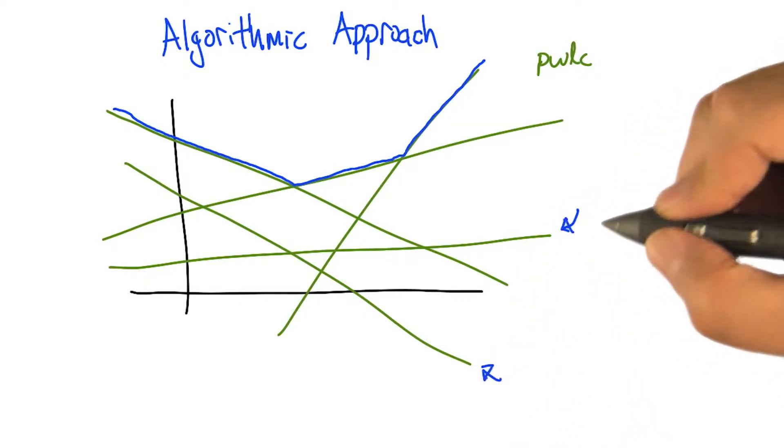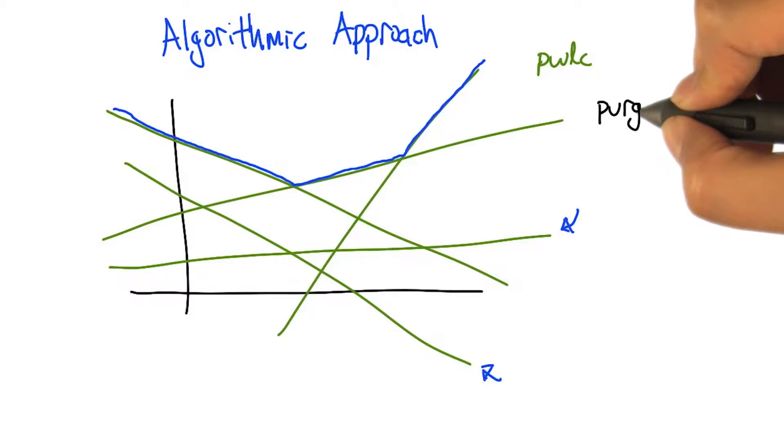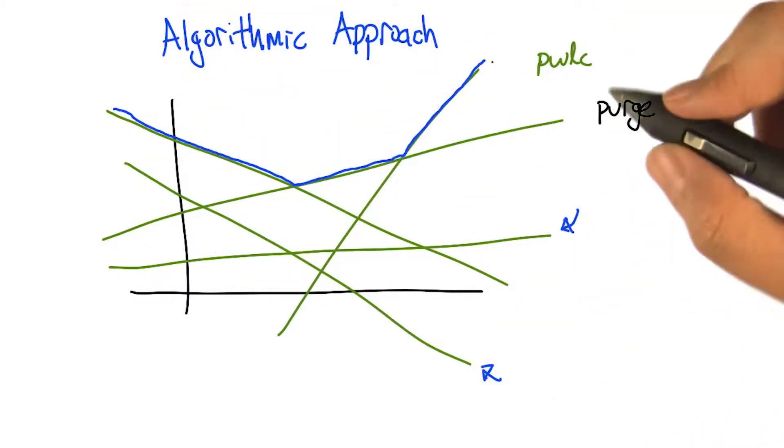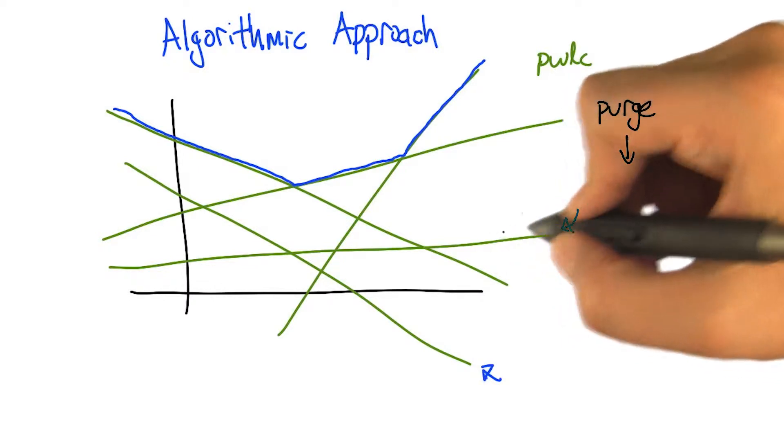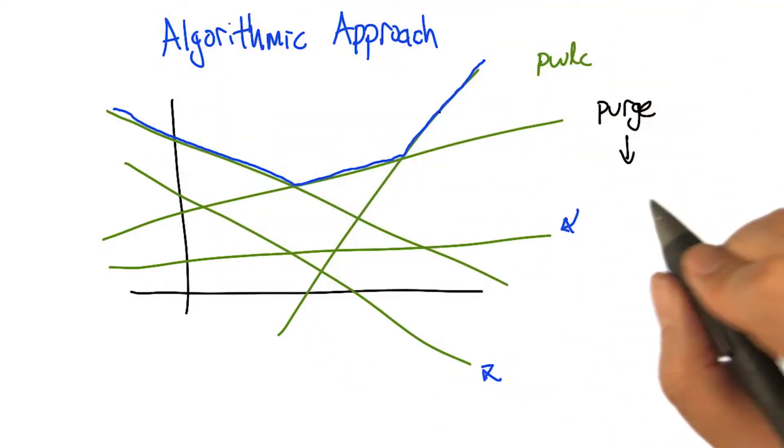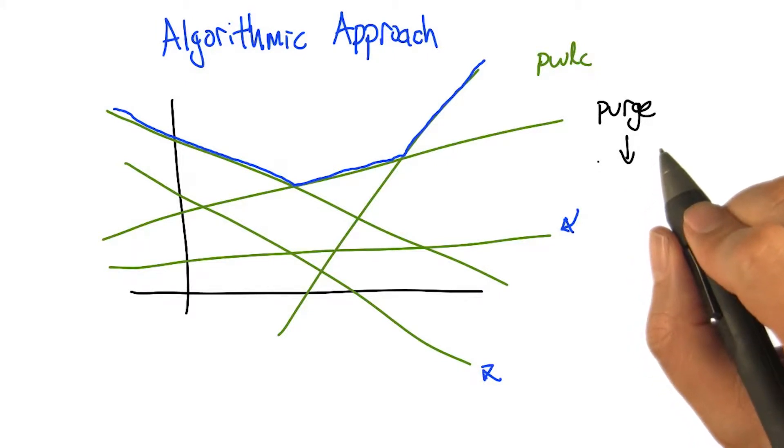So we can define a computational operation that we call purge, that takes a bag of vectors and shrinks it down, purges out any of vectors that aren't really needed to represent the upper surface, the piecewise linear convex function. Wait, how computationally complicated is it to do that? That's a good question.